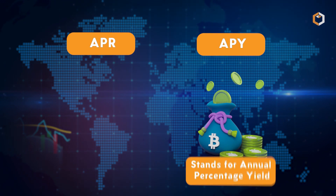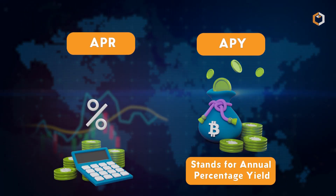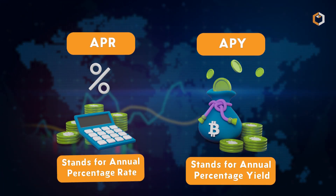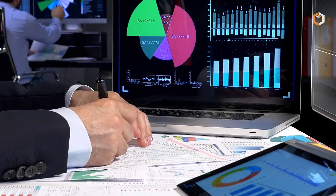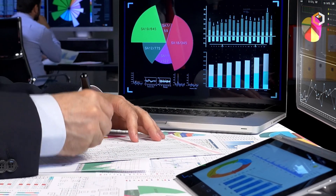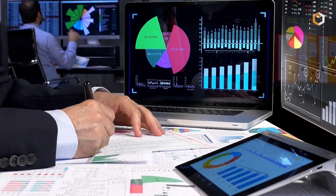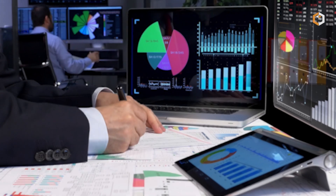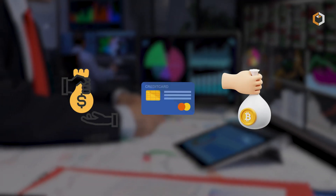APY stands for annual percentage yield, while APR stands for annual percentage rate. Both are used to represent the interest rate on a financial product, such as a savings account, loan, credit card, or even staking crypto.